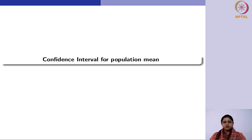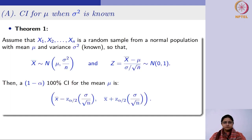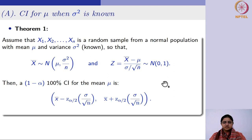Let us start with the confidence interval for the population mean. There are two situations: when the variance σ² is known, and when it is unknown. Let us first understand the case when σ² is known. The theorem states that if you have a random sample from a normal population with mean μ and known variance σ², then from sampling distribution theory, the sample mean x̄ follows N(μ, σ²/n), and standardized it follows the standard normal distribution.